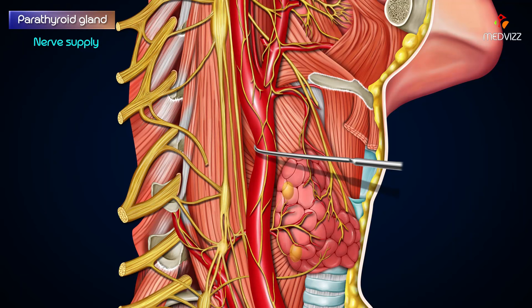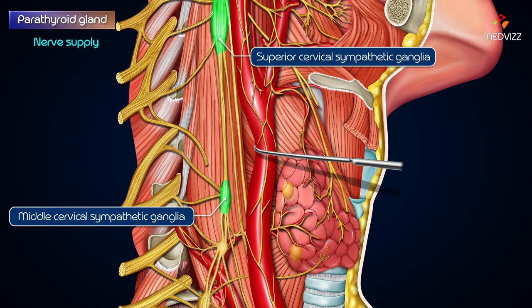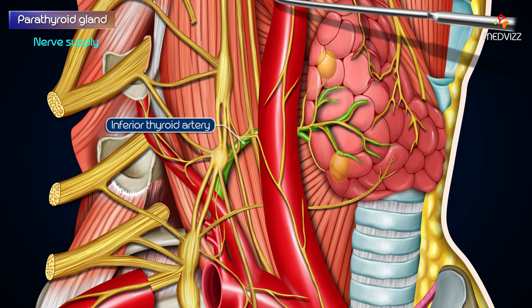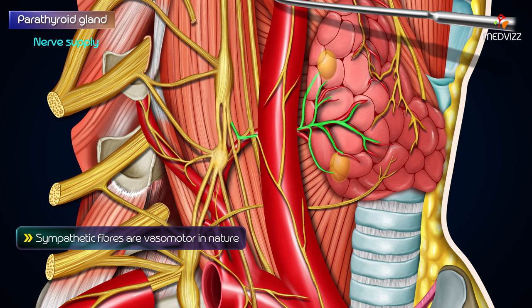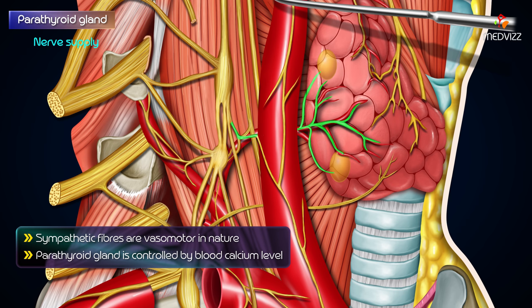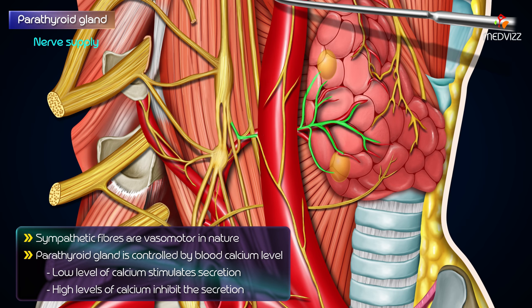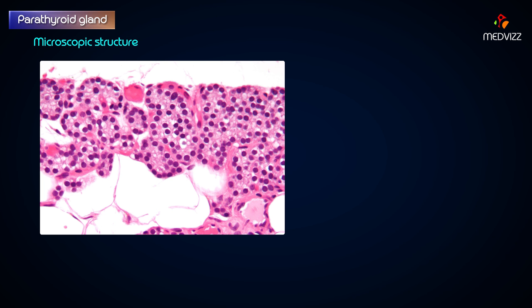The parathyroid glands are supplied by sympathetic fibers derived from the superior and middle cervical sympathetic ganglia, or the sympathetic plexus around the inferior thyroid artery. These fibers are vasomotor in nature. The secretory activity of the gland is controlled by blood calcium level — a low level of calcium stimulates secretion, whereas high levels of calcium inhibit secretion.